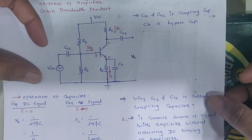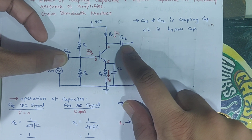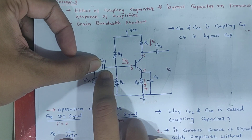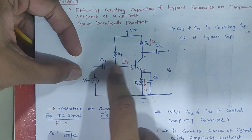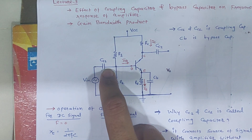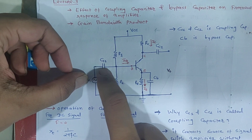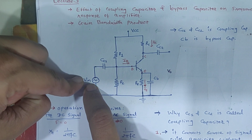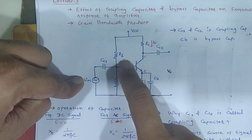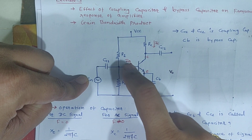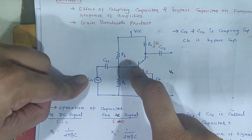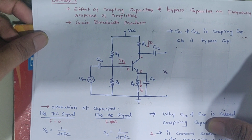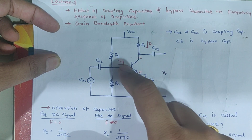The coupling capacitor CC1 is connected in series with the source. If there is any DC portion inside the signal source, it will filter it out and prevent it from entering the amplifier stage. If DC enters this stage, it will affect the biasing of the transistor and change the Q-point, so we will not get faithful amplification.